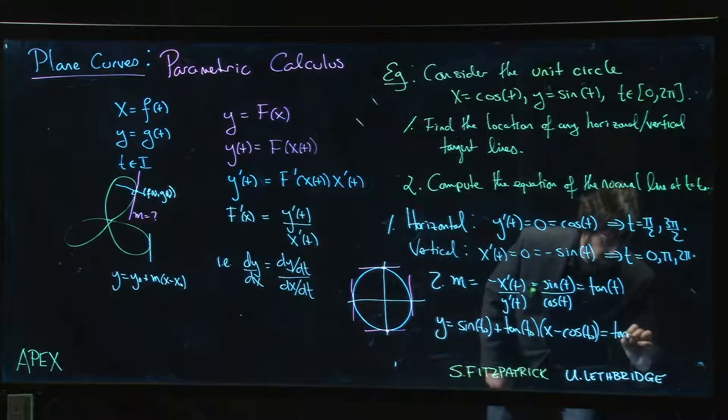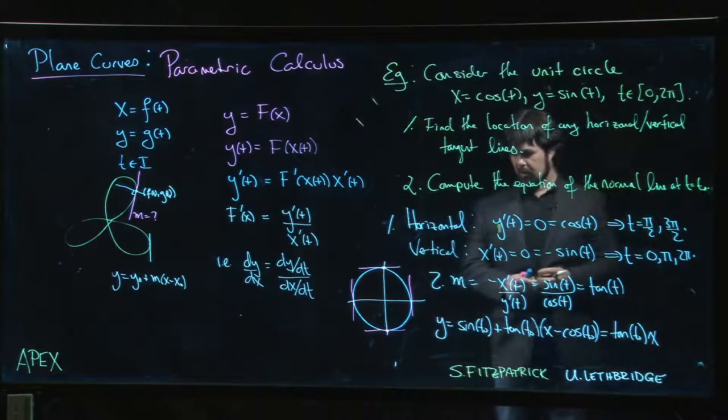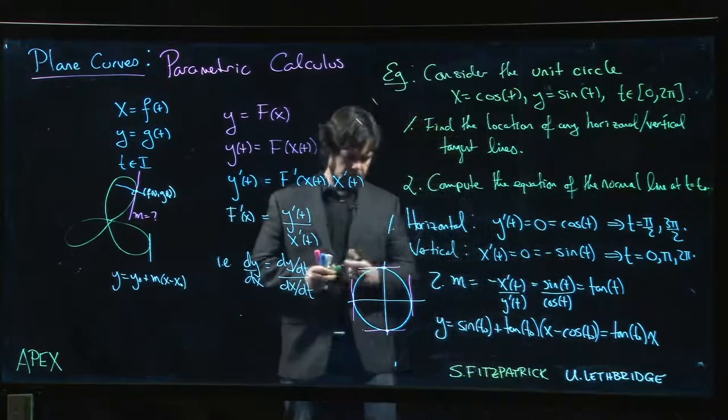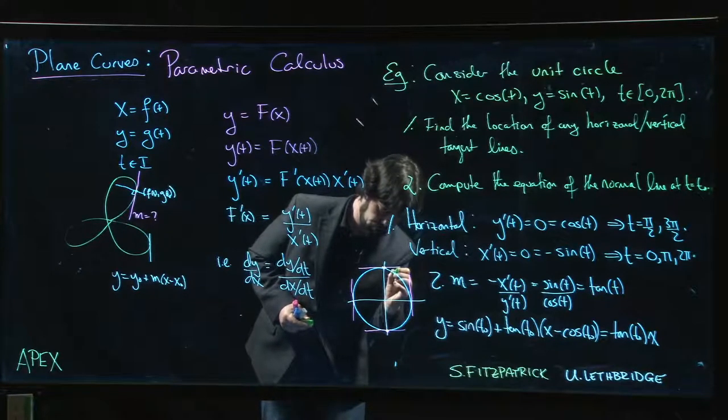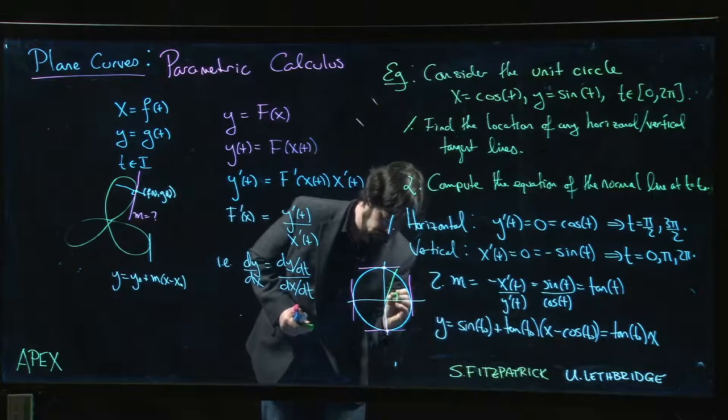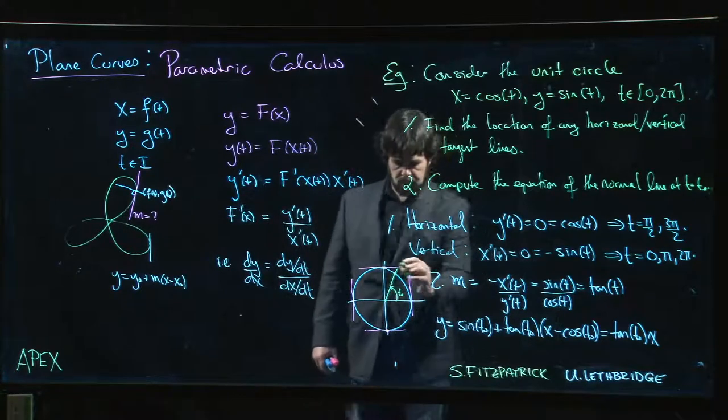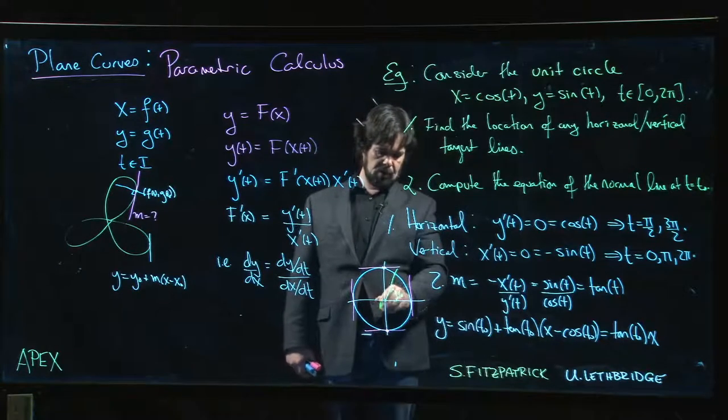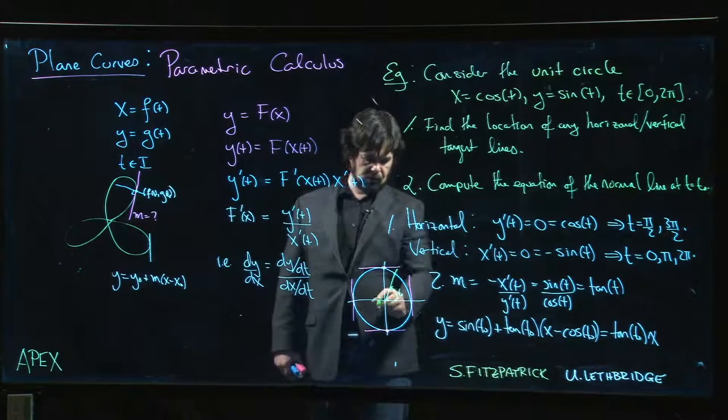Okay, so that actually gives us a couple of things. Let's mark some points. t₀ is some angle, and the normal line through the point—here's the corresponding point—the normal line passes through that point perpendicular to the circle. And notice that the normal line passes through the origin. It goes through those two points.